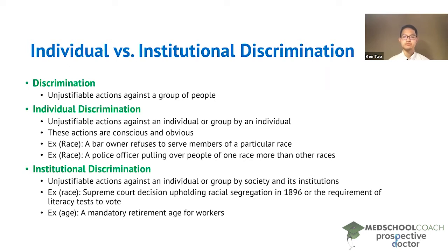As an example, we can consider the Supreme Court decision upholding racial segregation in 1896. Since it's a Supreme Court decision, it is not done by an individual and it also affects the entire country. Another example would be the requirement of literacy tests to vote.